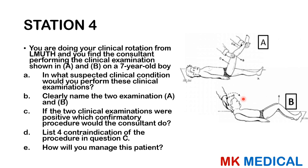Station 4. You are doing your clinical rotation at Levy Mwanawasa University Teaching Hospital and you find your consultant performing the clinical examinations shown in A and B on a 7-year-old boy. Part A: in what suspected clinical condition would you perform these examinations? Part B: clearly name the two examinations A and B. Part C: if the two examinations were positive, which confirmatory procedure would the consultant do? Part D: list four contraindications of that procedure. Part E: how will you manage this patient?